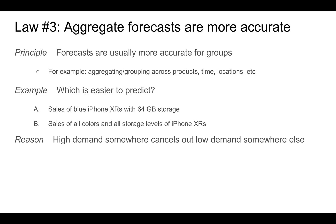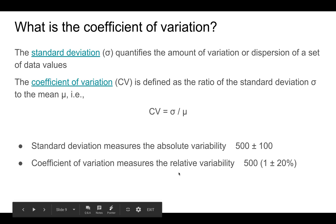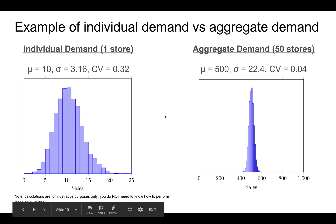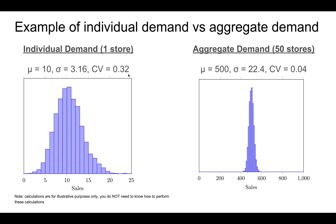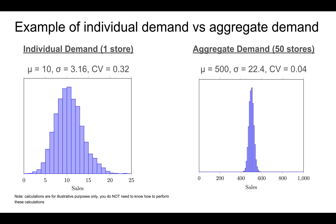What I said is not completely statistically rigorous, but this is not a statistics course, so I don't want to get into statistical details. To quantify this, you can look at the standard deviation and the coefficient of variation. The standard deviation measures the absolute variability of a random variable, whereas the coefficient of variation measures the relative variability. For example, if the absolute variability is 100, the relative variability is 20%. If you look at demand at a single store, the coefficient of variation is about 32%. On the other hand, if you look at the aggregate demand over 50 independent copies of this store, you get a coefficient of variation of about 4%, which is much, much lower. These calculations just illustrate that aggregate forecasts are more accurate; you don't have to know how to perform them.